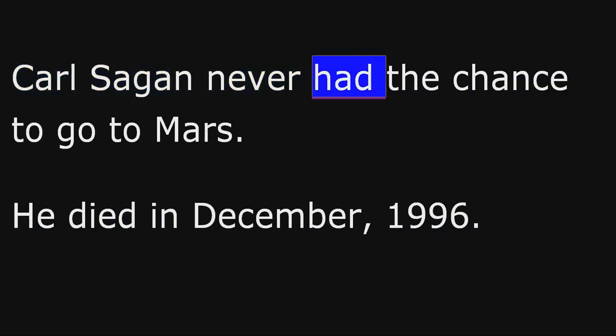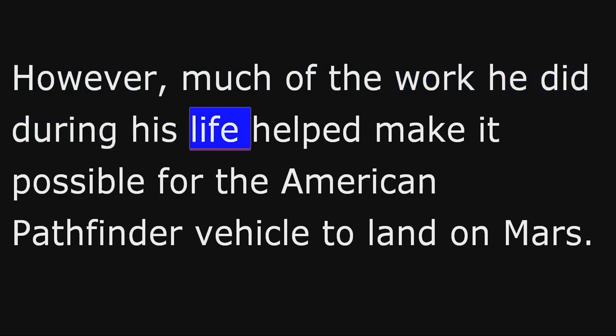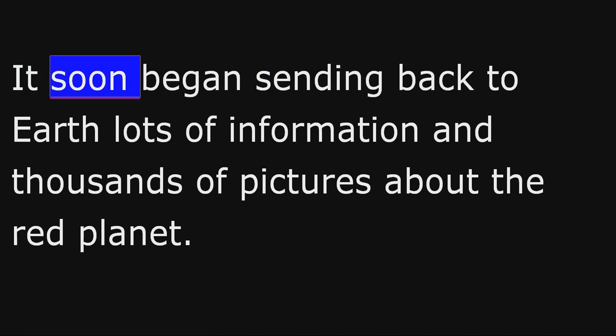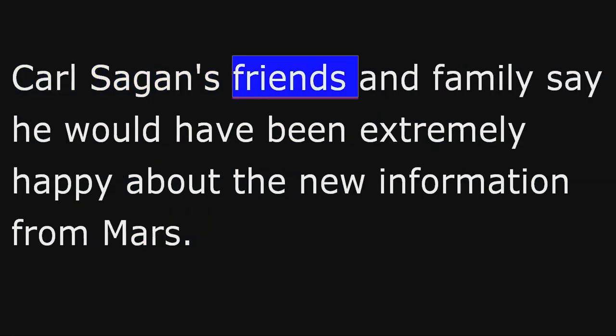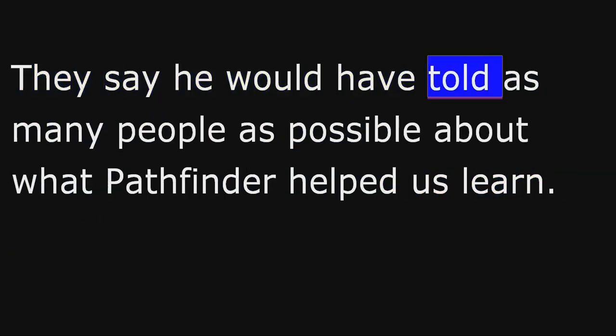Carl Sagan never had the chance to go to Mars. He died in December 1996. However, much of the work he did during his life helped make it possible for the American Pathfinder vehicle to land on Mars. It landed on July 4th, 1997. It soon began sending back to Earth lots of information and thousands of pictures about the red planet. Carl Sagan's friends and family say he would have been extremely happy about the new information from Mars. They say he would have told as many people as possible about what Pathfinder helped us learn.